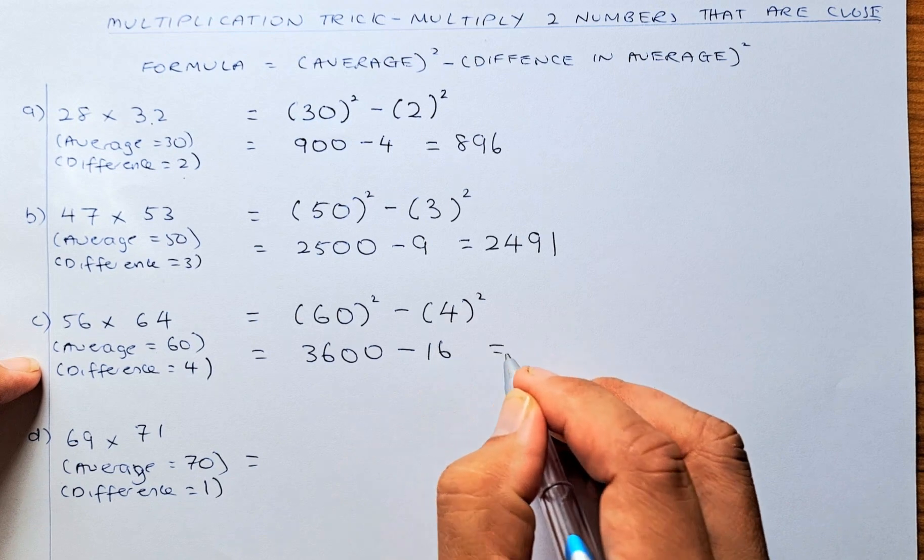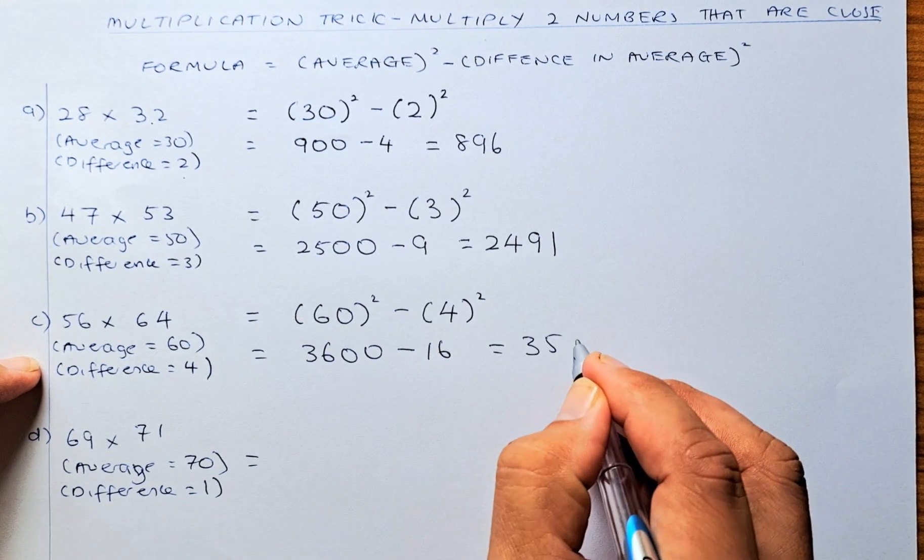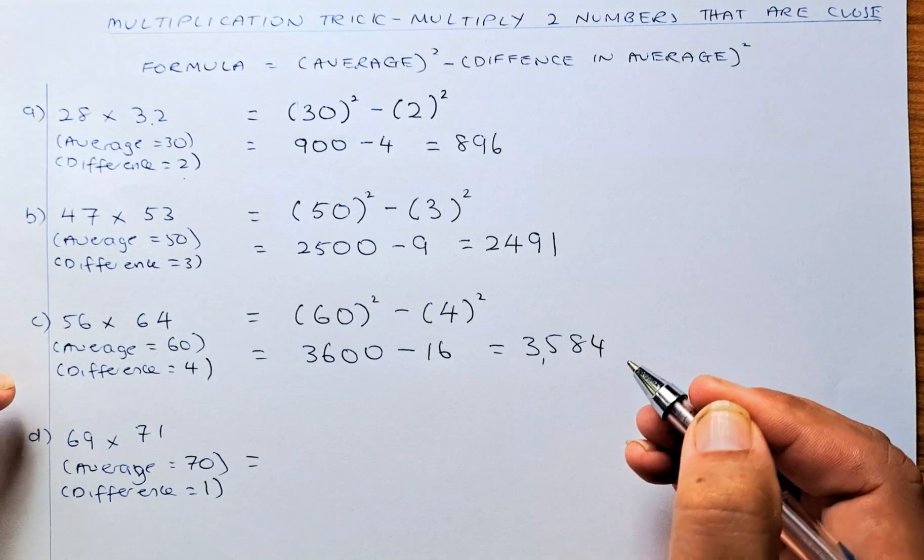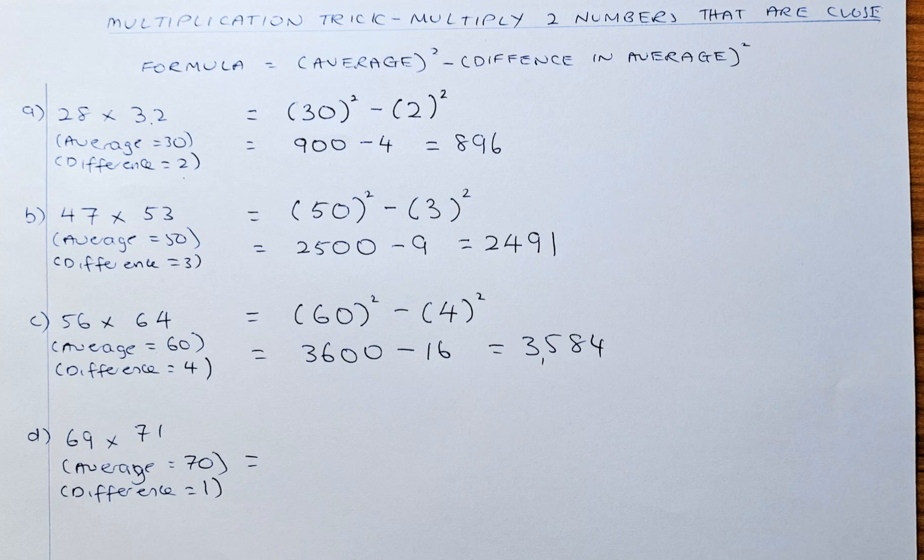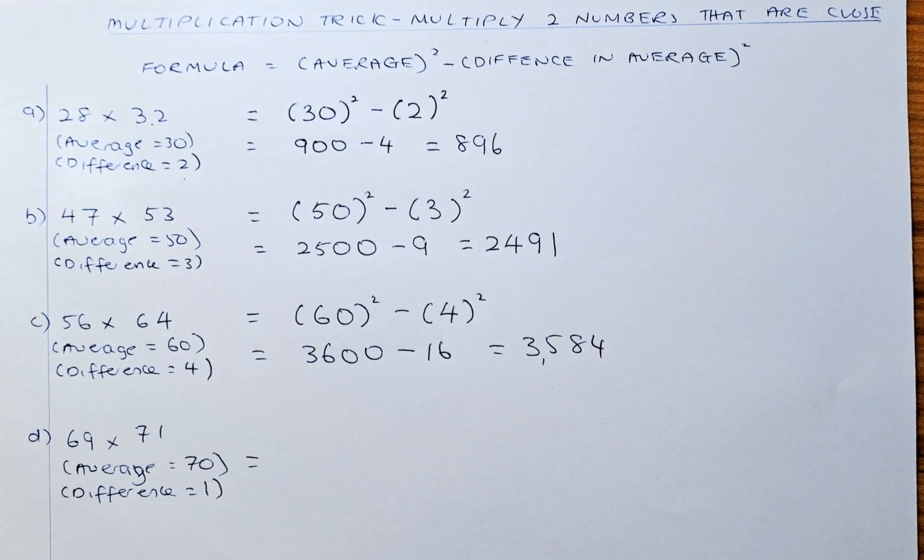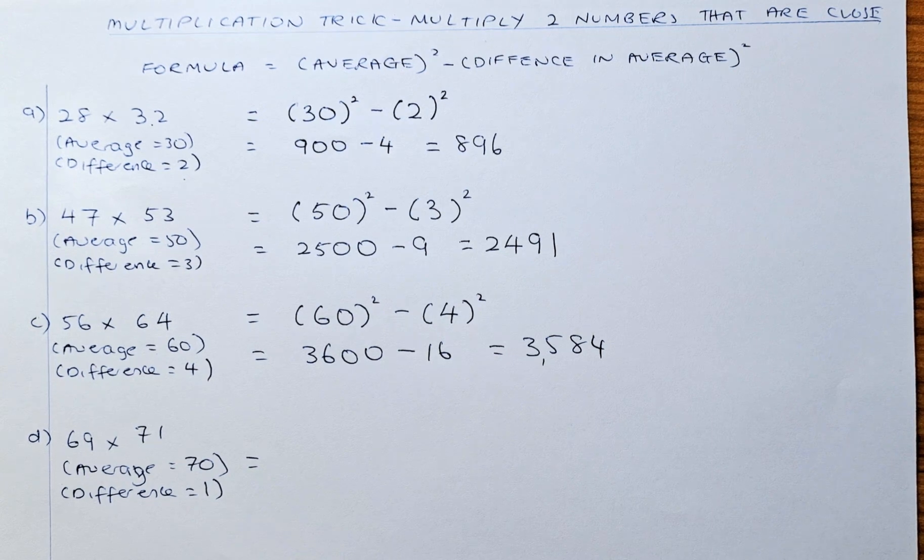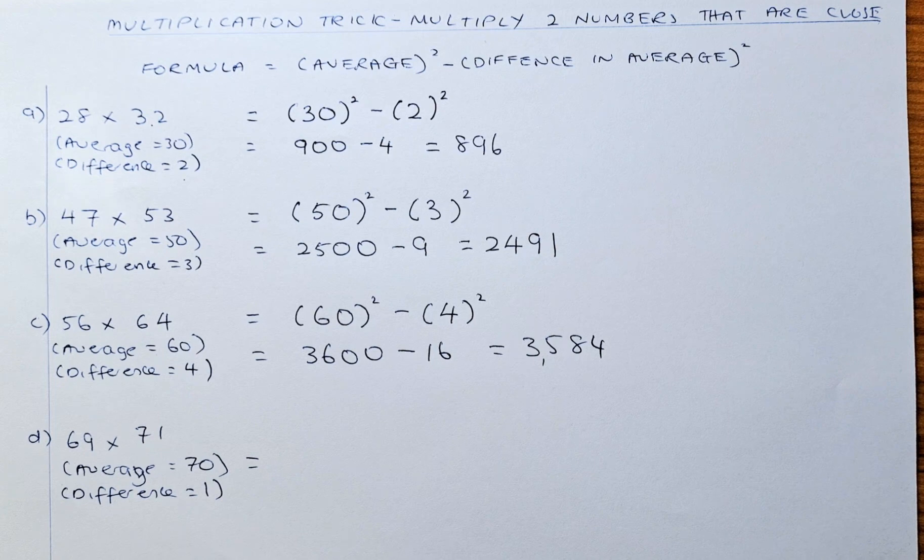16, and the answer is 3,584. That is a really quick way to multiply two numbers that are very close to each other and you can find the whole number average. And last but not least, we have 69 times 71. It sounds daunting, but after today you'll be able to do this in one second.